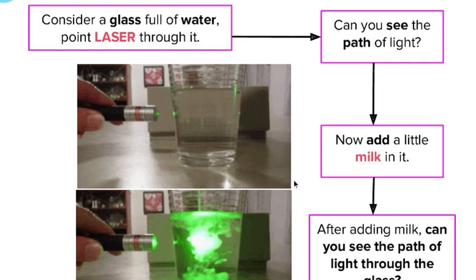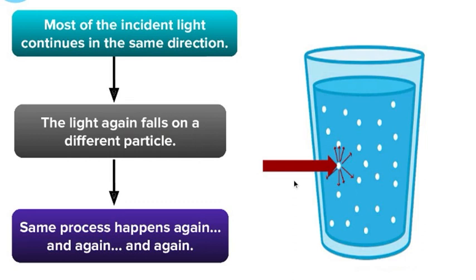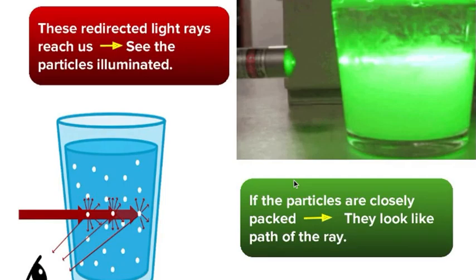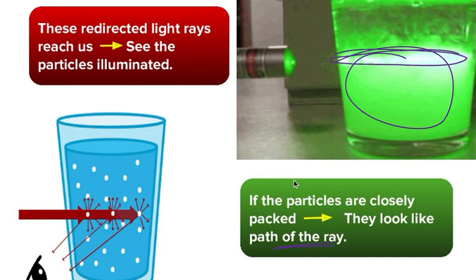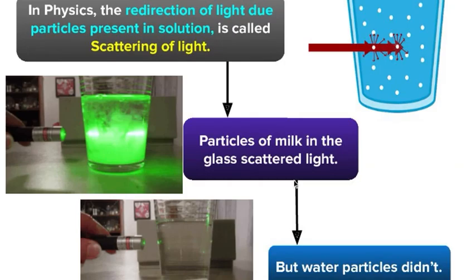Consider there is a glass full of water. You can do this experiment. When you pass a laser light, you won't be able to see the exact path. Now do one thing - add some amount of milk, a few drops of milk. Now again put the laser. You will be able to see the green path. What happened? Most of the incident light continues in the same direction, but when the light falls on the different particles, it gets scattered. When milk particles came, light rays started to scatter. A greenish illumination formed. If the particles are closely packed, you can see the path of ray. The lights are scattering. This redirection of light due to particles present in the solution is known as scattering of light.